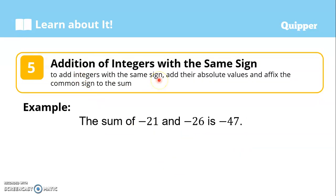Addition of integers with the same sign: when we say the same sign, the addends are all negative or all positive. To add integers with the same sign, we just have to add their absolute values and affix the common sign to the sum. If you do not know what absolute value is, I recommend that you watch my previous video about absolute values.